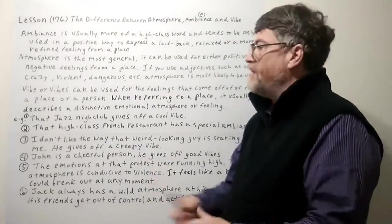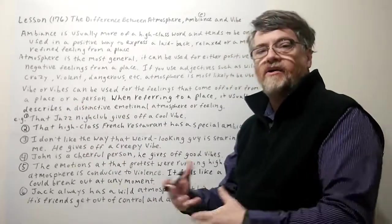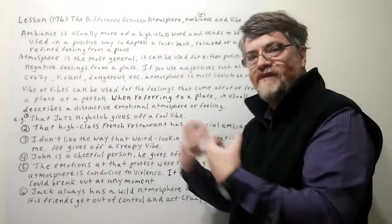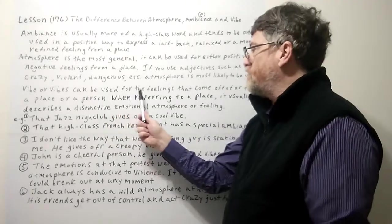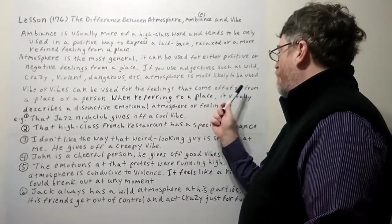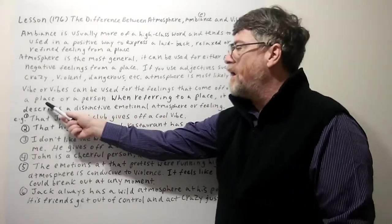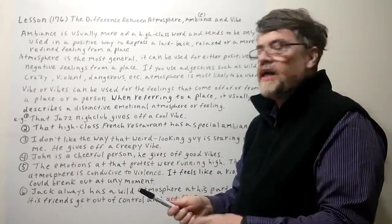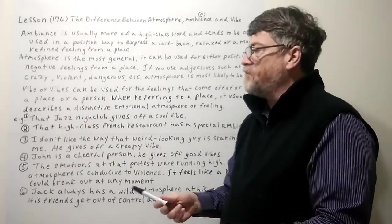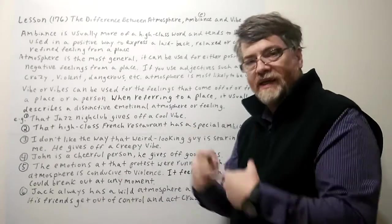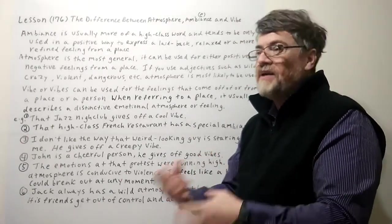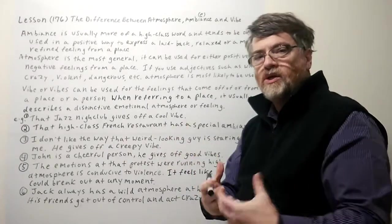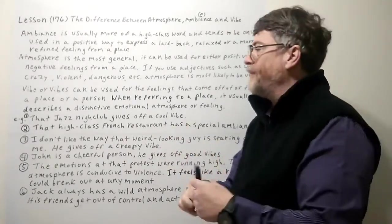Now let's look at vibe — or vibes, because you can say you get a vibe or you get vibes. It can be used for feelings that come off from a place or a person. One key thing to note is that vibes can also refer to feelings from people. I think it's used a little bit more for feelings from people, but you can use it for a place every now and then.